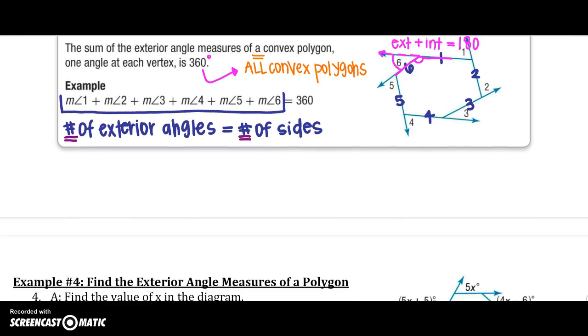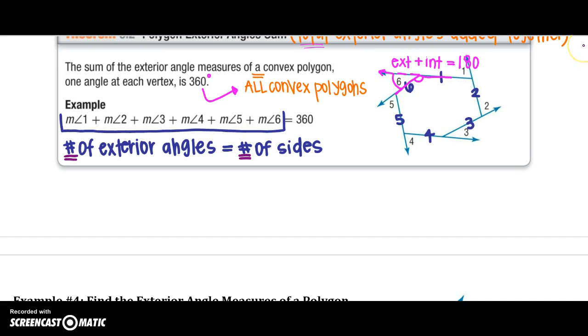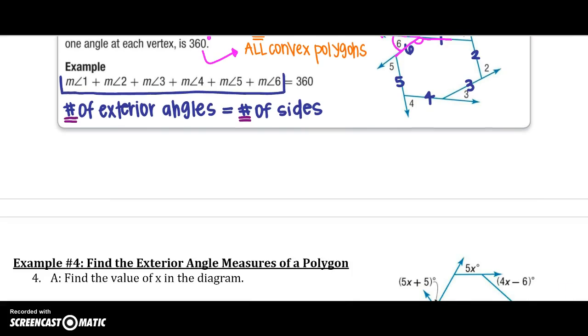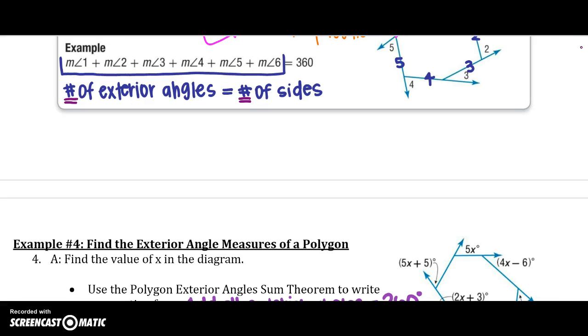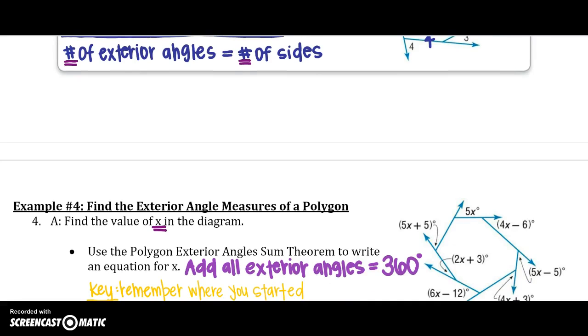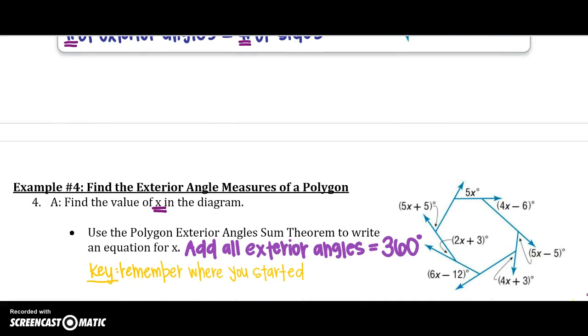Alright, at the top of this next page, before we get started, will you put in the top left-hand corner the total number – what is the total number of all the exterior angles? What will they always add up to that we just talked about? So put that in the top left-hand corner of this next page. Alright, so we are going to find the exterior angle measures of the polygon. We need to find the value of x in our diagram. So we need to use the polygon exterior angles theorem to write an equation for x, which means we need to add all exterior angles to equal – remember that awesome number, 360 degrees.